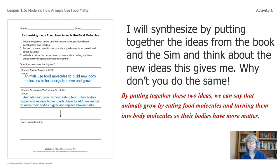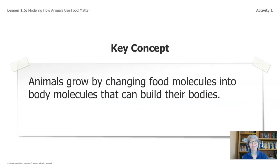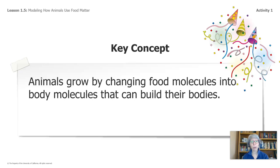By putting these two ideas together, we can say that animals grow by eating food molecules and turning them into body molecules so their bodies have more matter. If that's an idea that's similar to yours, that's great. And if you need to add some more to your new understanding from what we've been talking about here, you can do that as well. Because what we had just landed on is a key concept: animals grow by changing food molecules into body molecules that can build their bodies. We built this idea slowly over time so that when we arrive at it, we are really firm with this idea. Feel free to jot this one down.